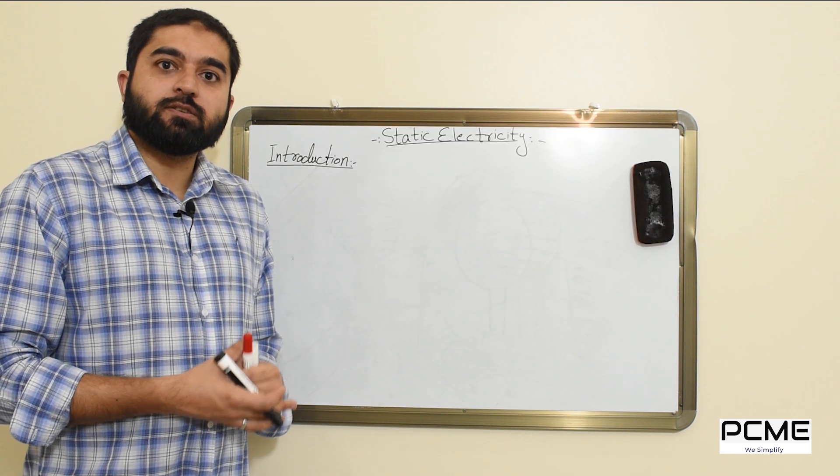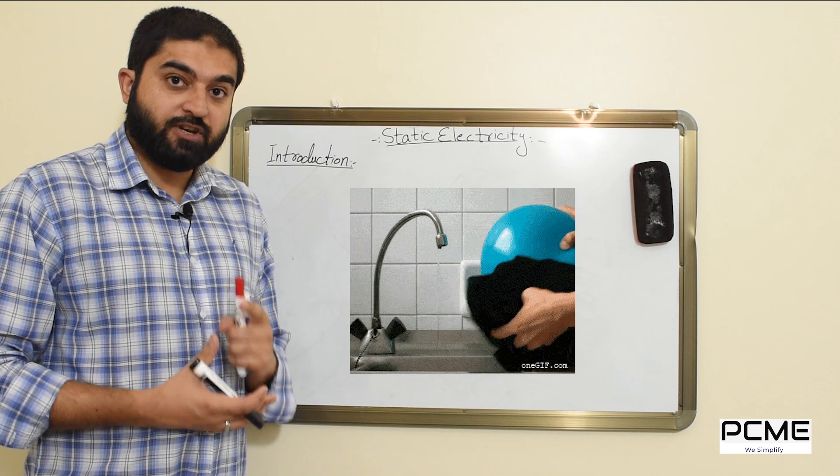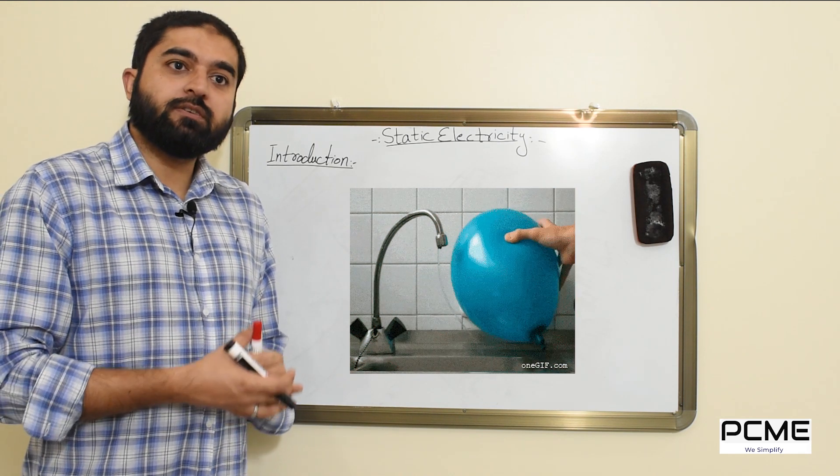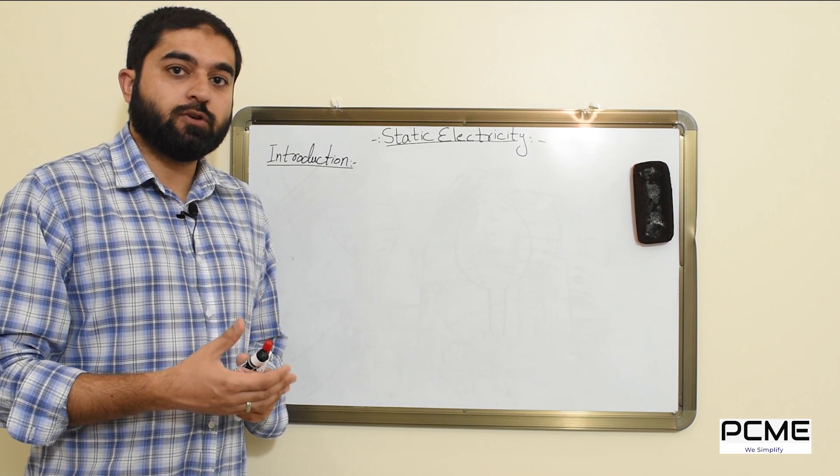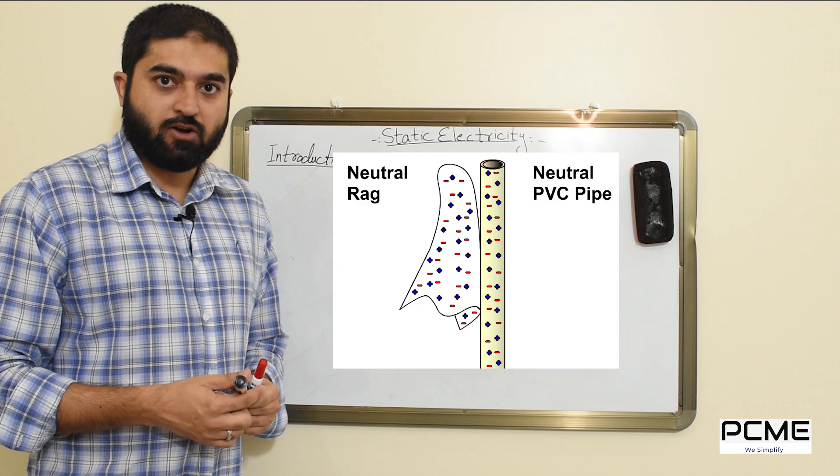Now one of the major causes of static electricity is friction. Whenever there is friction between two objects like rubbing a woolen cloth against a plastic object...